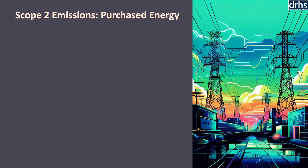Scope 2 emissions are indirect greenhouse gas emissions resulting from the consumption of purchased energy such as electricity, steam, heating, and cooling. While these emissions do not originate directly from an organization's operations, they are a significant contributor to overall carbon footprints. Managing and reducing scope 2 emissions is crucial for organizations aiming to achieve sustainability goals and minimize their environmental impact.